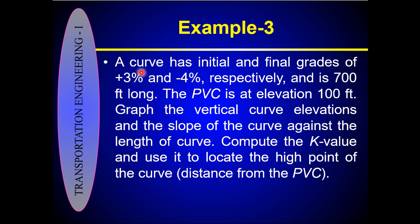We have four given parameters: initial grade G1 is 3 percent, final grade G2 is minus 4 percent, length of the curve L is 700 feet, and elevation of the PVC is 100 feet. We need to find the elevations and slope values of the vertical curve for graphical representation, then compute the K value, and use it to determine the highest point of the curve.